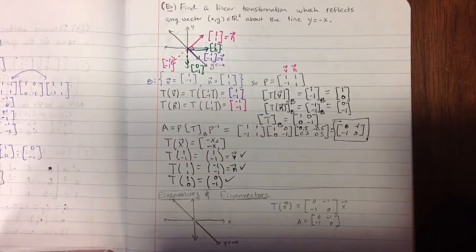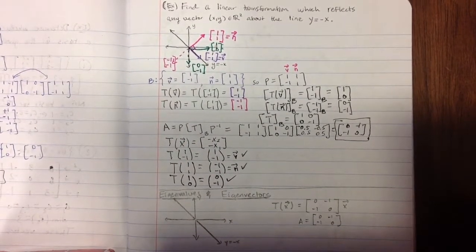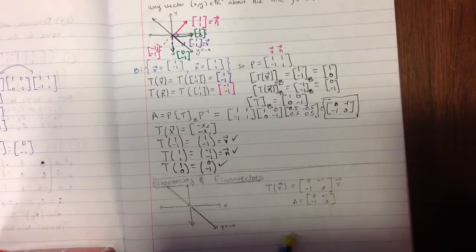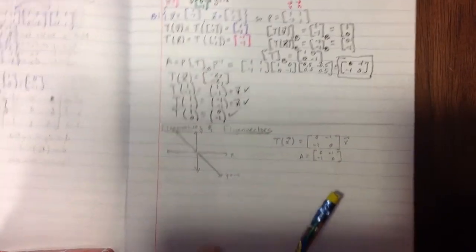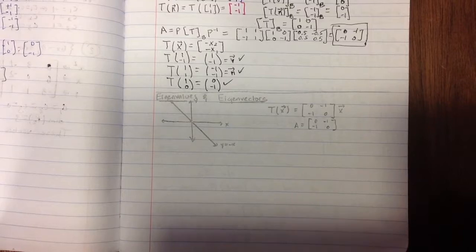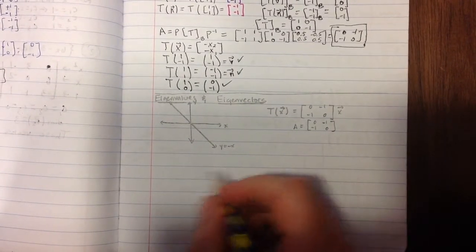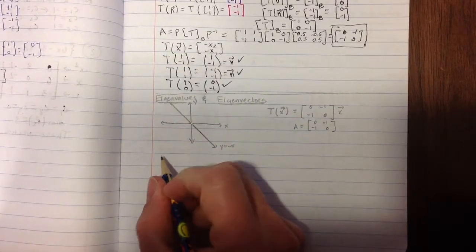We knew that that would reflect it exactly the opposite way. So this is a good tie-in for eigenvalues and eigenvectors. So really, what are eigenvalues and eigenvectors?